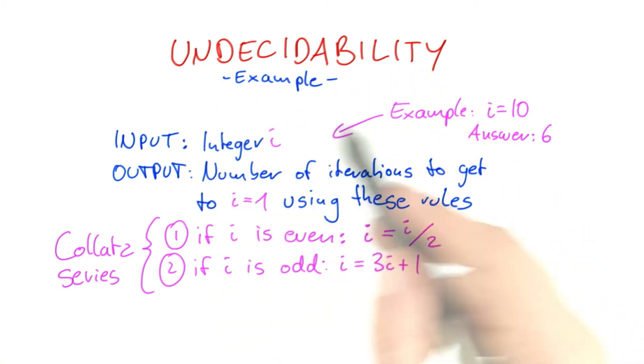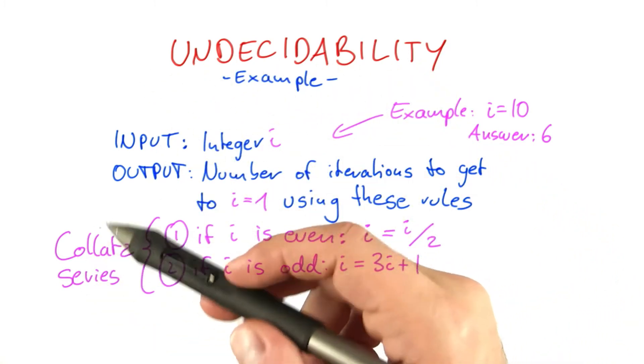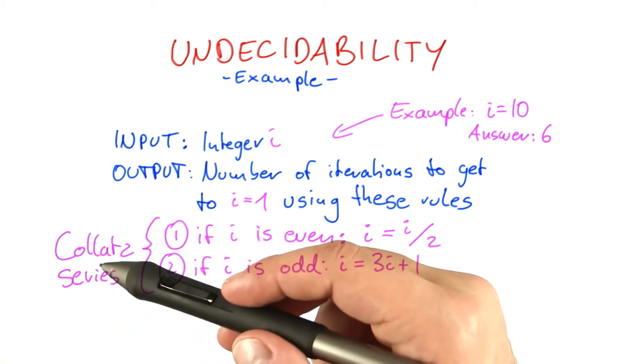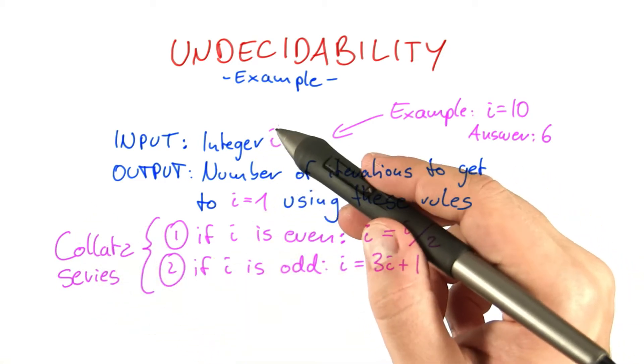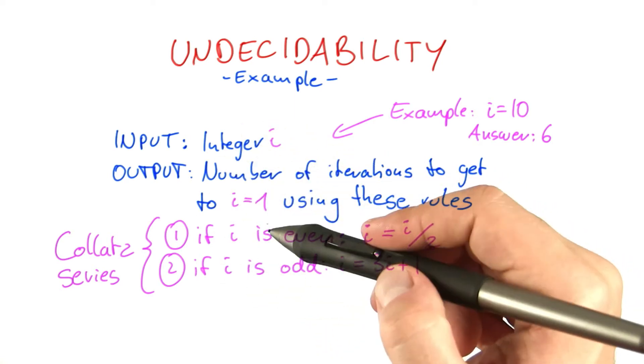Now truth be told, it would have to be a very large integer, because the Collatz hypothesis has been verified for large numbers indeed. Nevertheless, once the integer is out of this range, we have no way of deciding whether this algorithm would terminate or not.